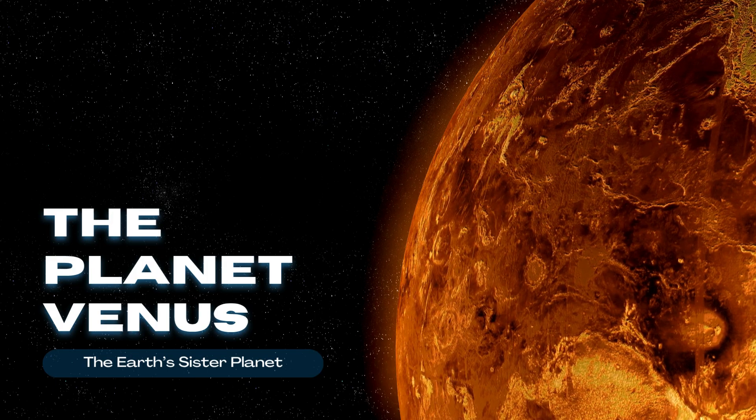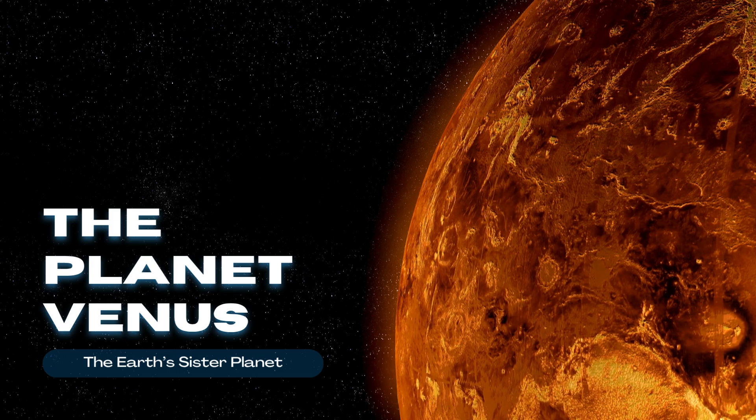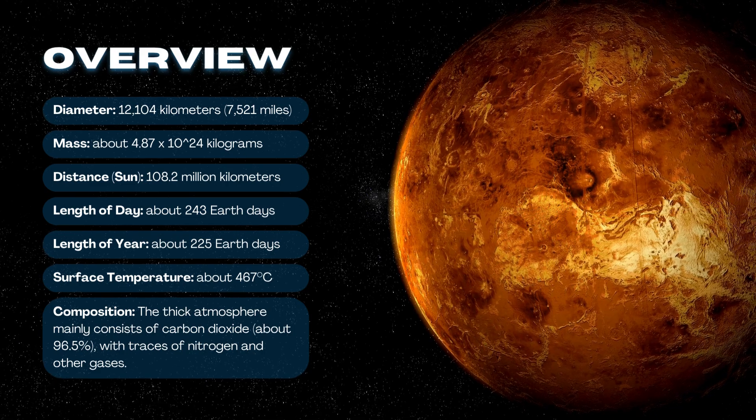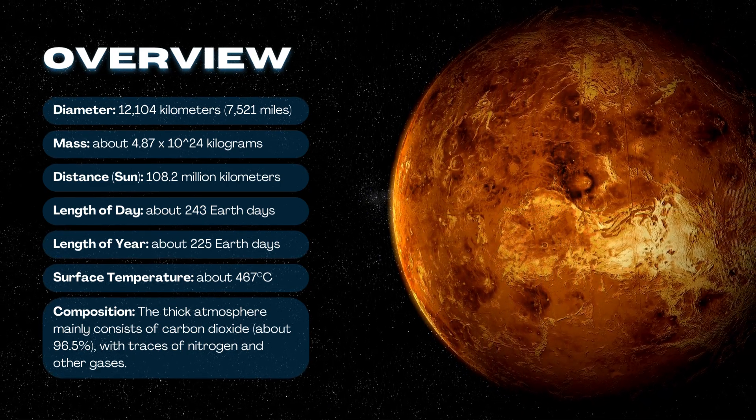The planet Venus, the Earth's sister planet. Composition: The thick atmosphere mainly consists of carbon dioxide, about 96.5%, with traces of nitrogen and other gases.